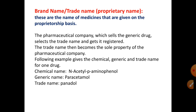To illustrate all three names for one drug: the chemical name is acetyl-p-aminophenol, the generic name is paracetamol, and the trade name is Panadol. This is a very common example — the drug we commonly use is paracetamol, whose chemical name is acetyl-p-aminophenol and whose trade name is Panadol.